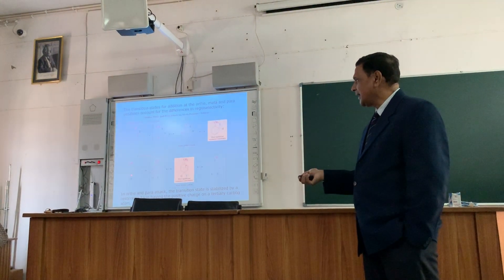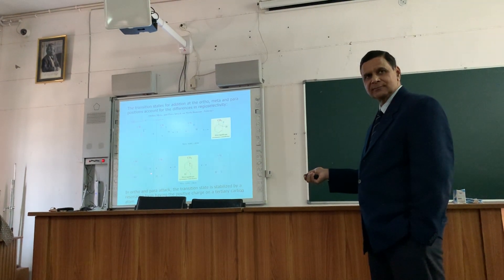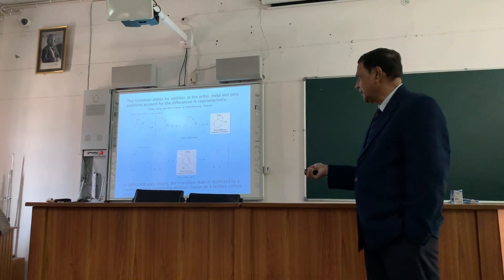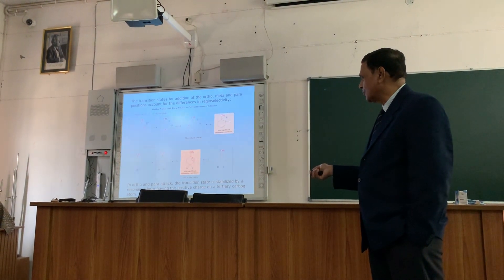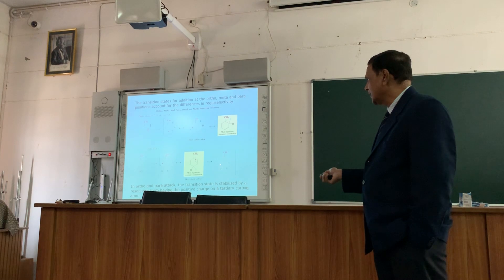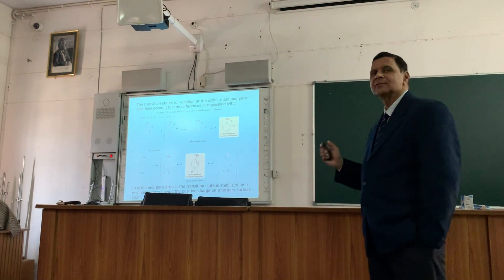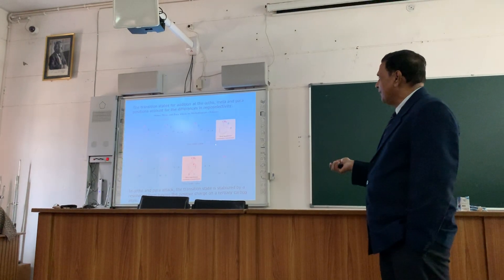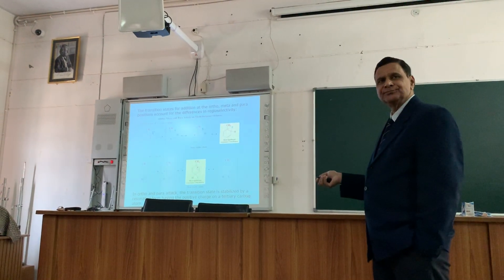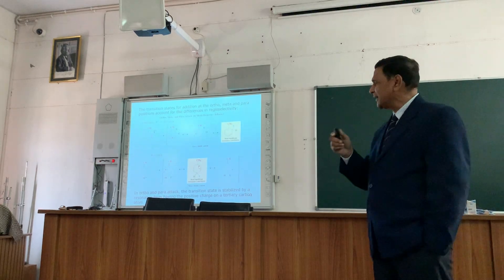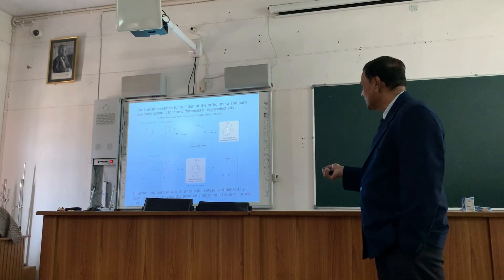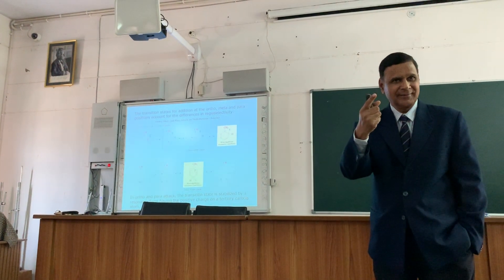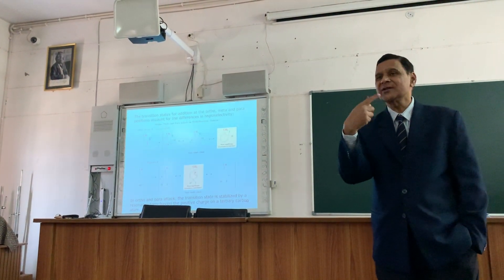When the attack is at the para position, the positive charge forms here, the electrons are donated — again a carbocation is formed, and we have these resonance structures. Looking at these two structures, the carbocation is at a position which is considered to be a tertiary carbocation, and therefore more stable.